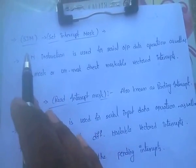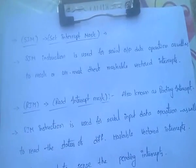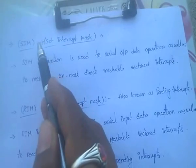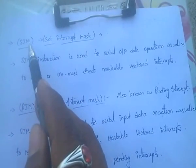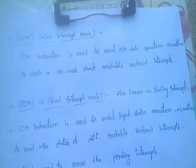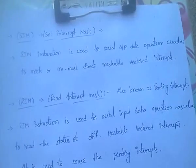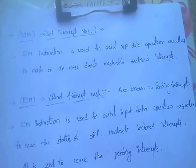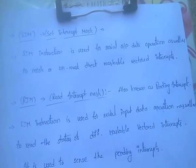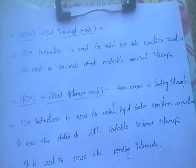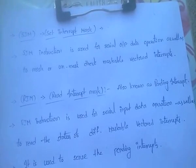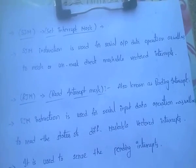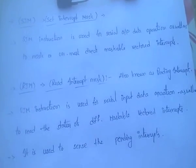SIM is nothing but Set Interrupt Mask. SIM instruction is used for serial output data operation as well as to mask or unmask direct maskable vectored interrupts.